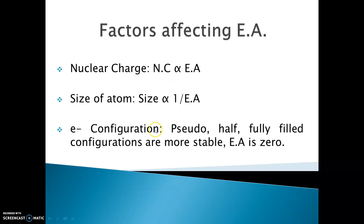The third factor is electronic configuration. For pseudo-filled and half-filled configurations, electron affinity is almost zero, and for fully-filled configurations, electron affinity is zero, because these configurations are more stable and addition of an electron in these configurations is difficult.